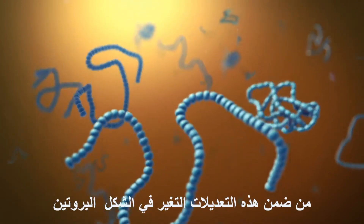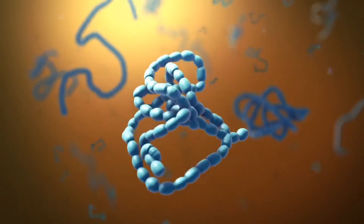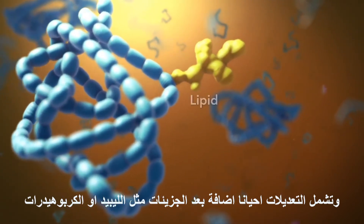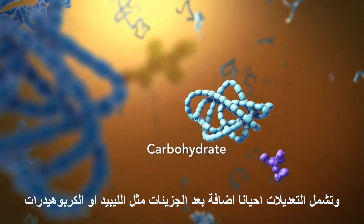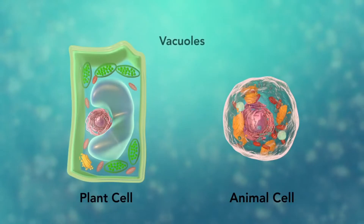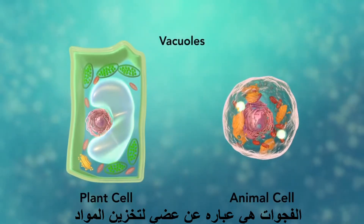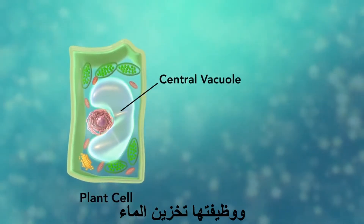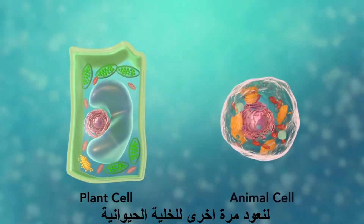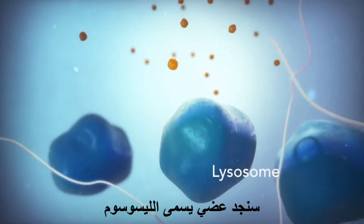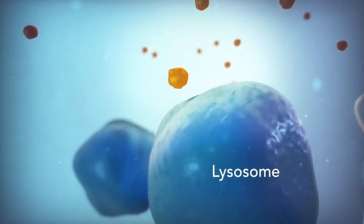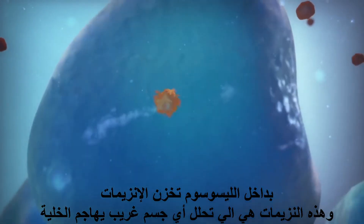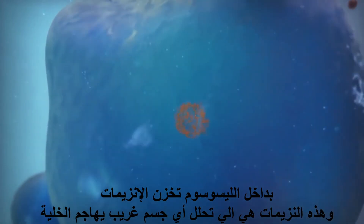As proteins move through the Golgi body, they're customized into forms that the cell can use. The Golgi body does this by folding the proteins into usable shapes or adding other materials onto them, such as lipids or carbohydrates. Vacuoles are sac-like structures that store different materials — in this plant cell, the central vacuole stores water. In the animal cell, you will see an organelle called a lysosome. Lysosomes are the garbage collectors that take in damaged or worn-out cell parts; they are filled with enzymes that break down this cellular debris.